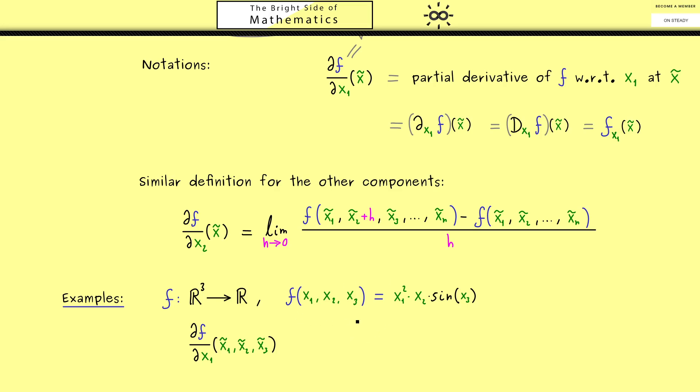Simply because the one-dimensional function x₁² we consider now is very simple. And here, please recall, with respect to the partial derivative, the two factors here, x₂ and sine of x₃, are just constants. Hence, our partial derivative here is 2 times x₁ times the constant. And then we put in the point x tilde, so all the components get tildes now.